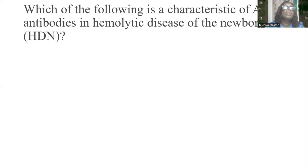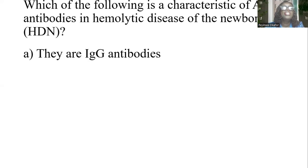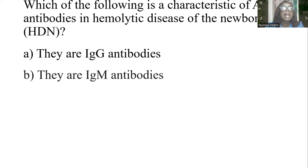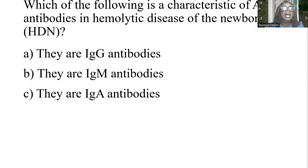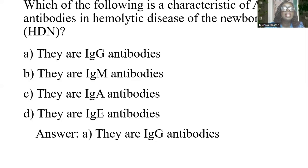Which of the following is a characteristic of ABO antibodies in hemolytic disease of the newborn? A) They are IgG antibodies. B) They are IgM antibodies. C) They are IgA antibodies. D) They are IgE antibodies. The answer is A: they are IgG antibodies.